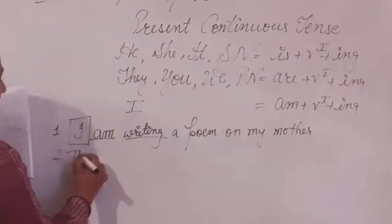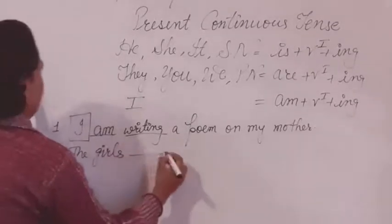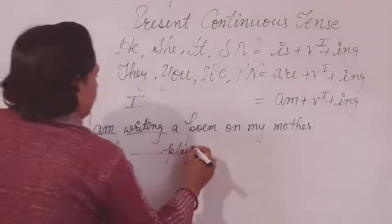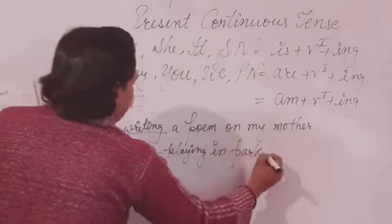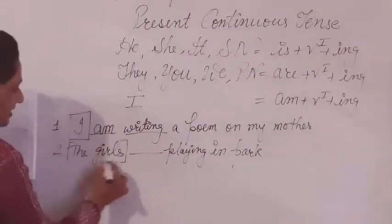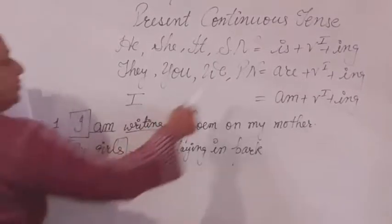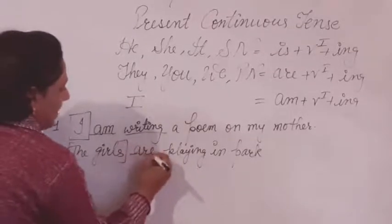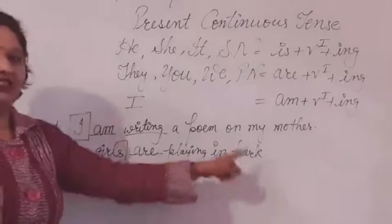Second sentence: The girls blank playing in the park. Here, we first look at the subject — the girls. Girls is a plural noun, so with the plural noun we will use ARE as the helping verb. The sentence becomes: The girls are playing in the park.